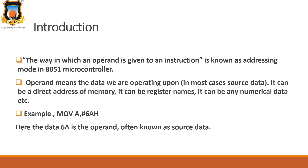The addressing mode is nothing but the way in which an operand is given to the instruction. Operand means the data we are operating upon, and in most cases it is a source data. It can be a direct address of a memory, or it can be a register name, or it can be any numerical data.